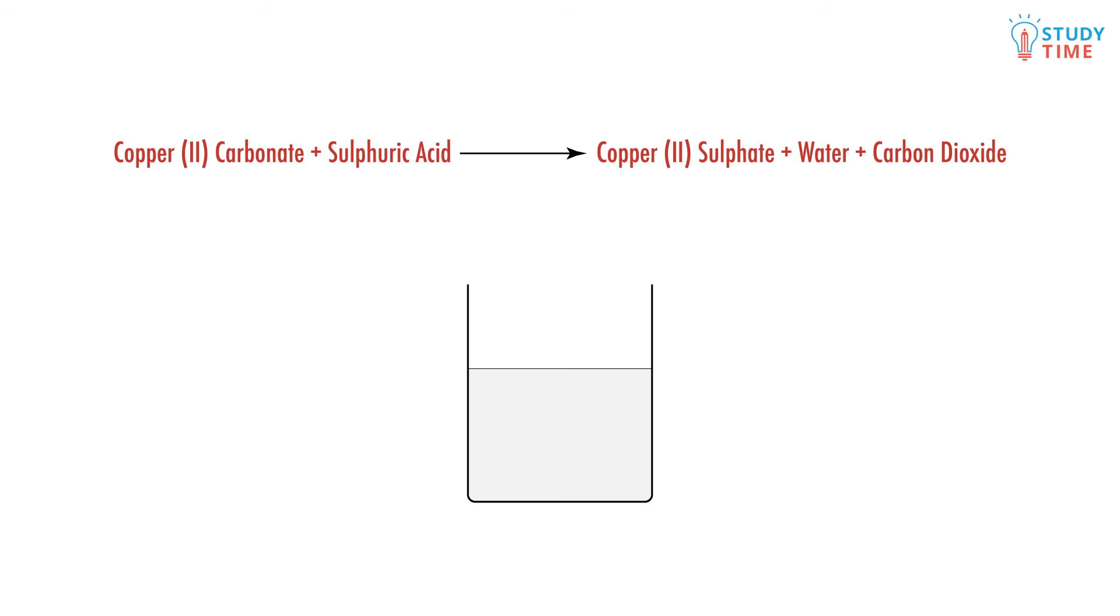Although we can still use universal indicator strips, if we add the copper carbonate slowly, we know the reaction is neutral when carbon dioxide no longer bubbles out.